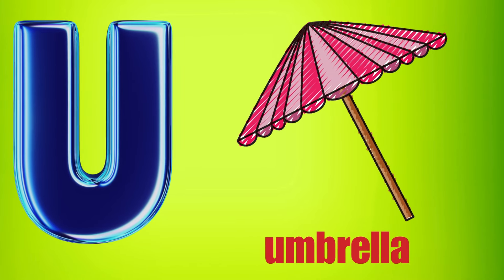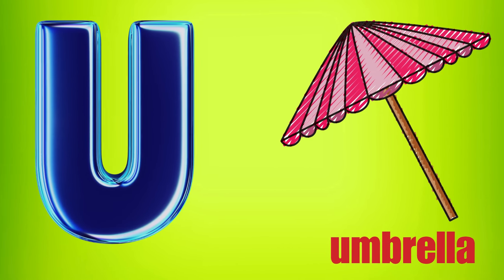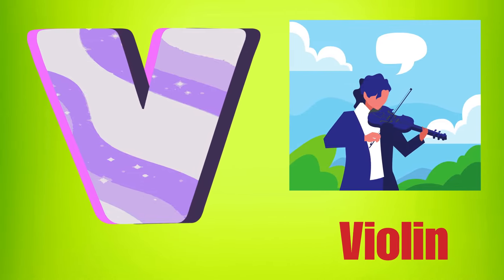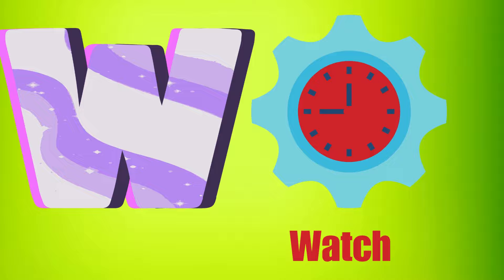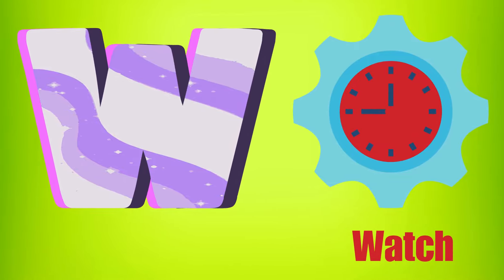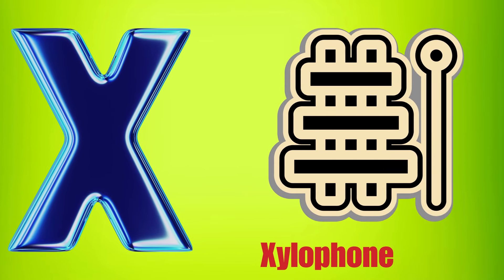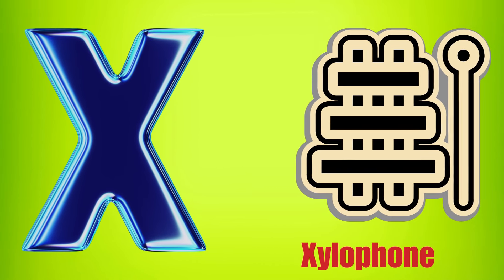U is for Umbrella, U-U-Umbrella. V is for Violin, V-V-Violin. W is for Watch, W-W-Watch. X is for Xylophone, X-X-Xylophone.